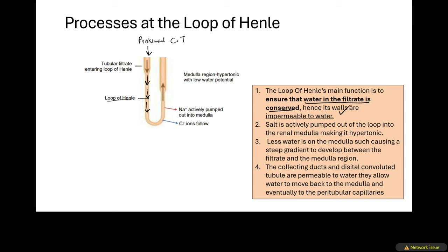This is essentially a two-mark answer. When asked to explain the main function of the loop of Henle, state that it ensures water in the filtrate is conserved, and mention that the loop of Henle has walls that are impermeable to water that do not allow water to leave the filtrate. That is why water is conserved at the loop of Henle.